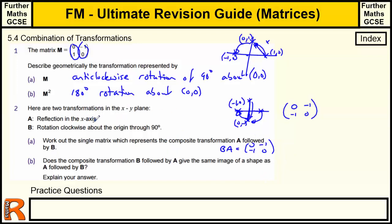Alternatively, we can find the individual matrices. Reflection in the x-axis: (1,0) stays, (0,1) goes to (0,−1), giving matrix [[1,0],[0,−1]]. Rotation 90 degrees clockwise: (1,0) goes to (0,−1), (0,1) goes to (1,0), giving [[0,1],[−1,0]]. Multiplying B times A should give our combined matrix. Computing: 0×1+1×0=0, 0×0+1×(−1)=−1, −1×1+0×0=−1, −1×0+0×(−1)=0, confirming our result.